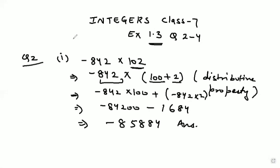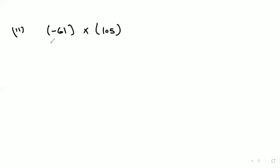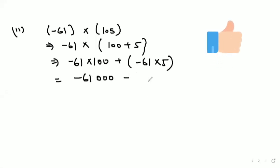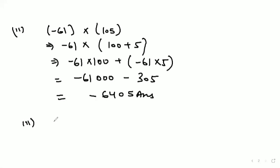Now come to the second part. We have been given minus 61 into 105. So 105 can be written as 100 plus 5. That gives minus 61 into 100, plus minus 61 into 5. Minus 61 into 100 is minus 6,100, and 61 into 5 equals 305, so minus 305. Adding these gives minus 6,405. This is our answer for the second part.